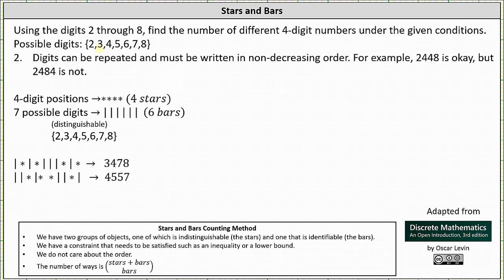The number of bars is always one less than the number of distinguishable items, which means every time we form a string of four stars and six bars, it represents a four-digit number that satisfies the conditions. Let's look at two possible stars and bars charts. We begin with the digit of two, and then because the first string starts with a bar, this indicates we switch to the digit of three, and then we have a star, which indicates we assign three to the leftmost digit of the four-digit number.